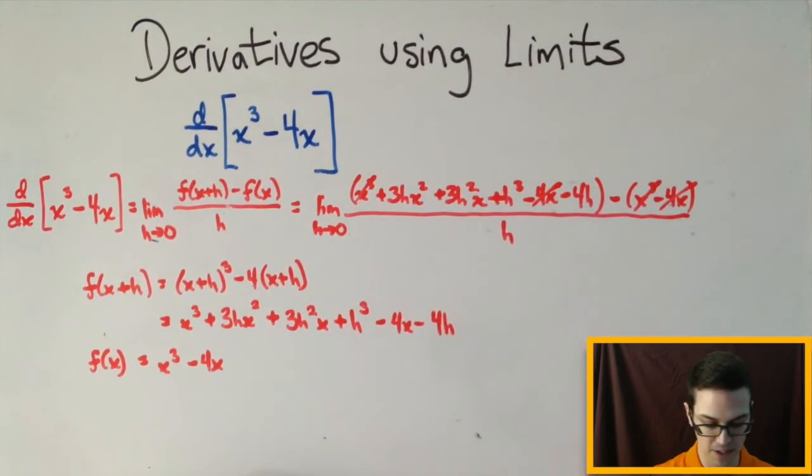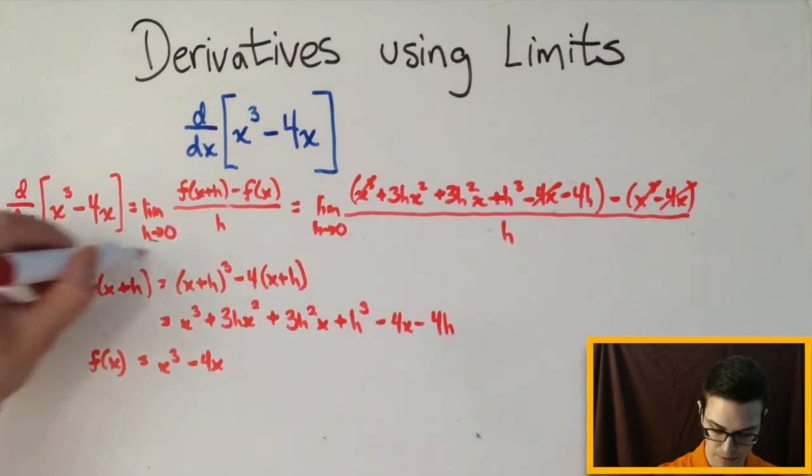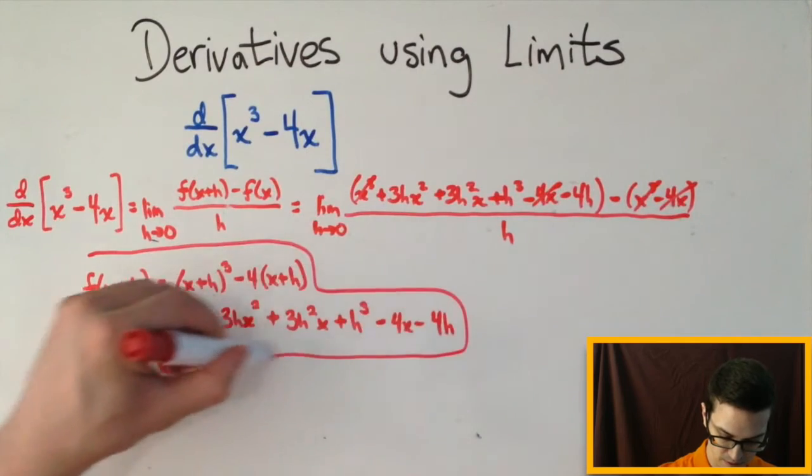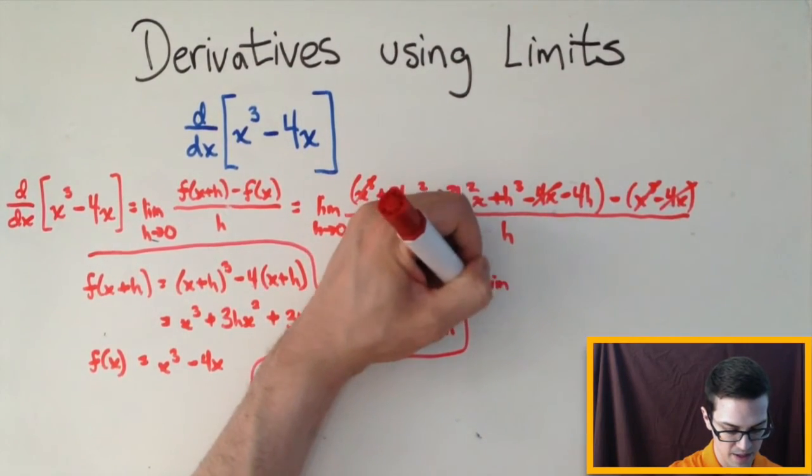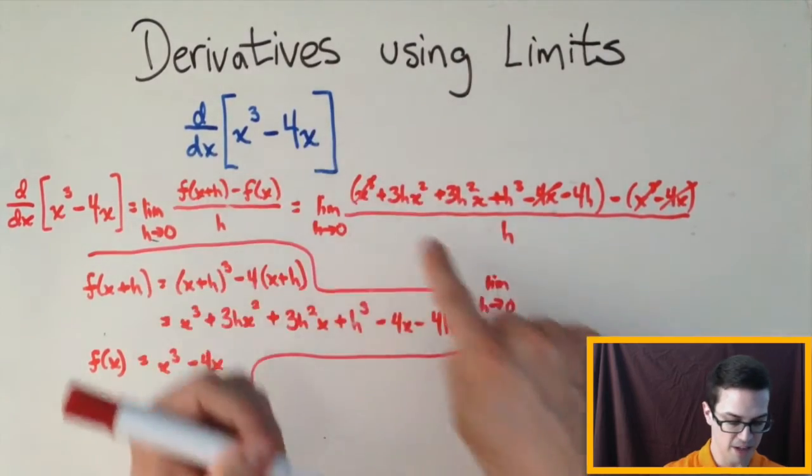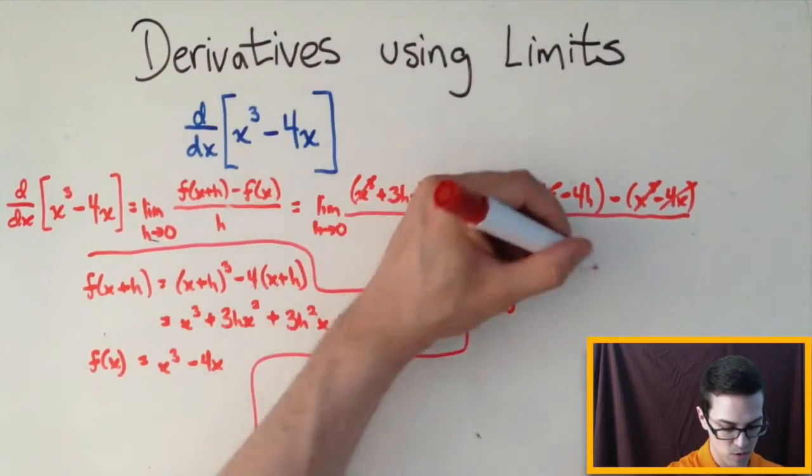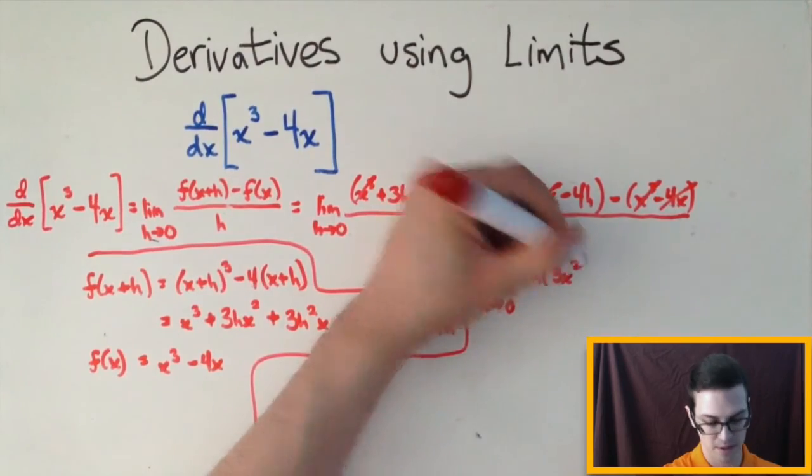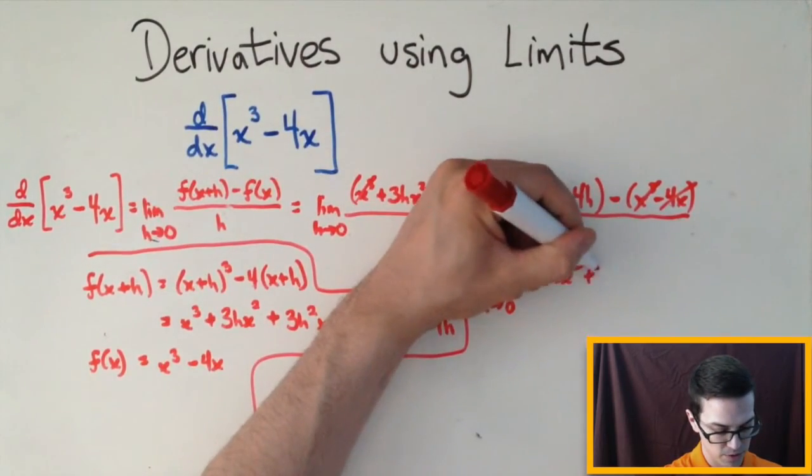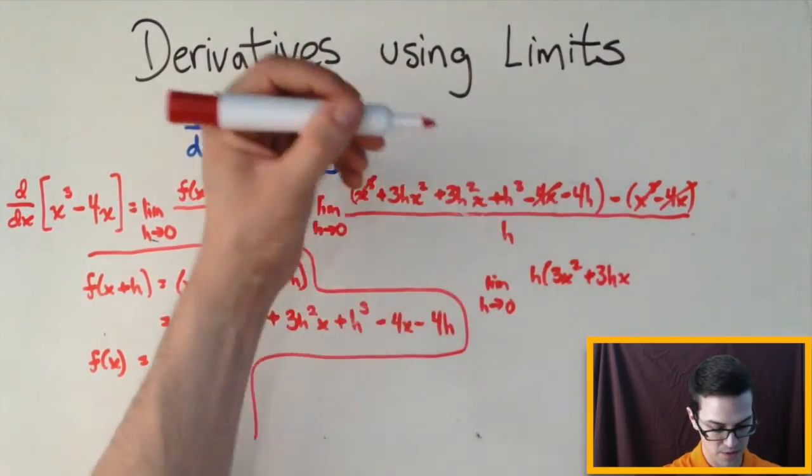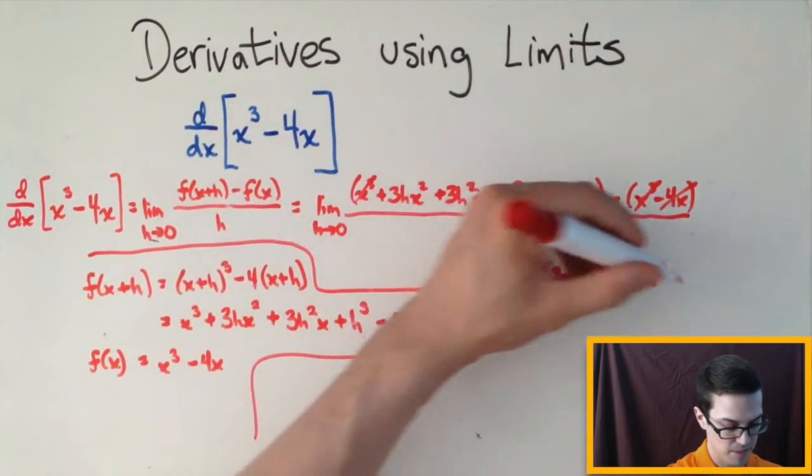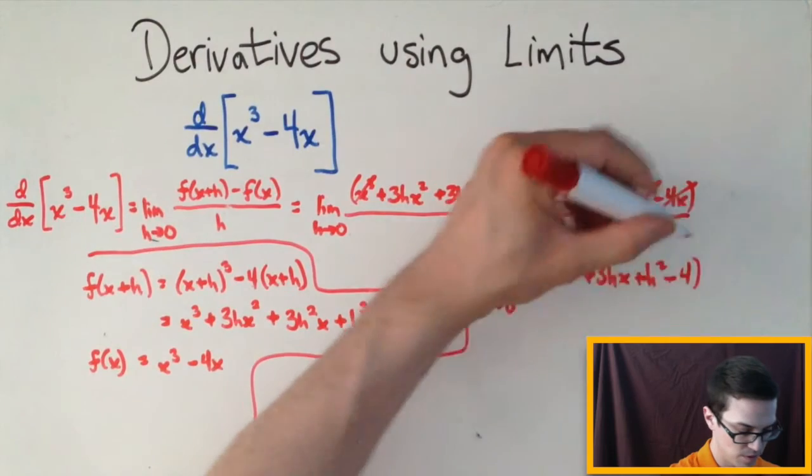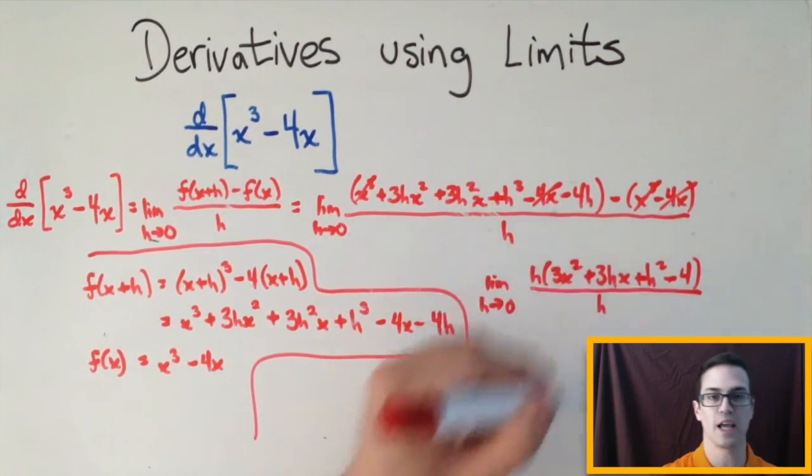So what I'm going to do with what's left here is I'm going to factor out an h. Okay, I'm going to kind of put a box around this just so it's out of the way. So we're going to have the limit as h goes to 0. And I'm going to factor out an h up top here. So it'll be h times the quantity 3x squared plus 3hx plus h squared minus 4 all divided by h.